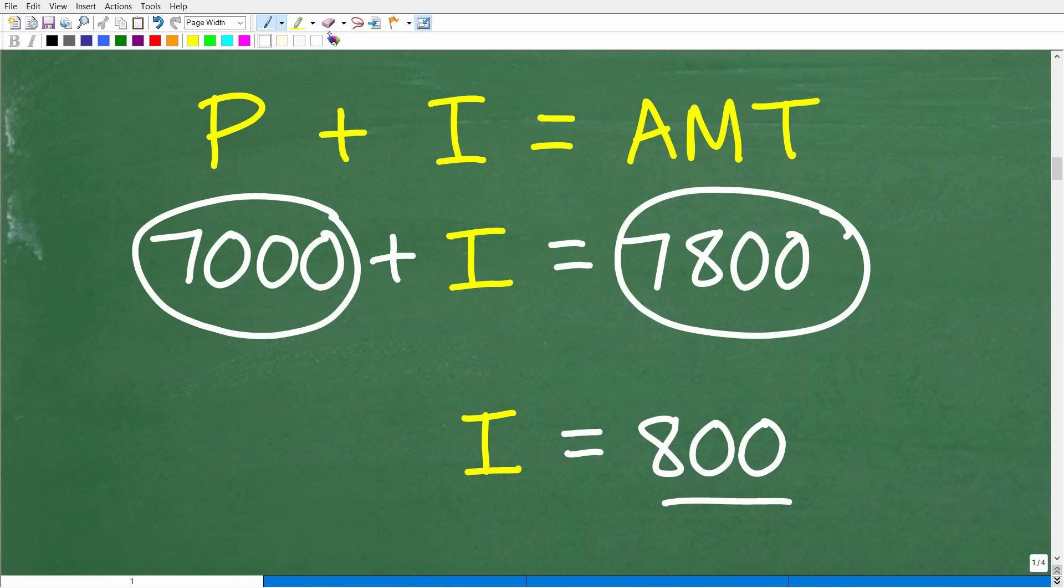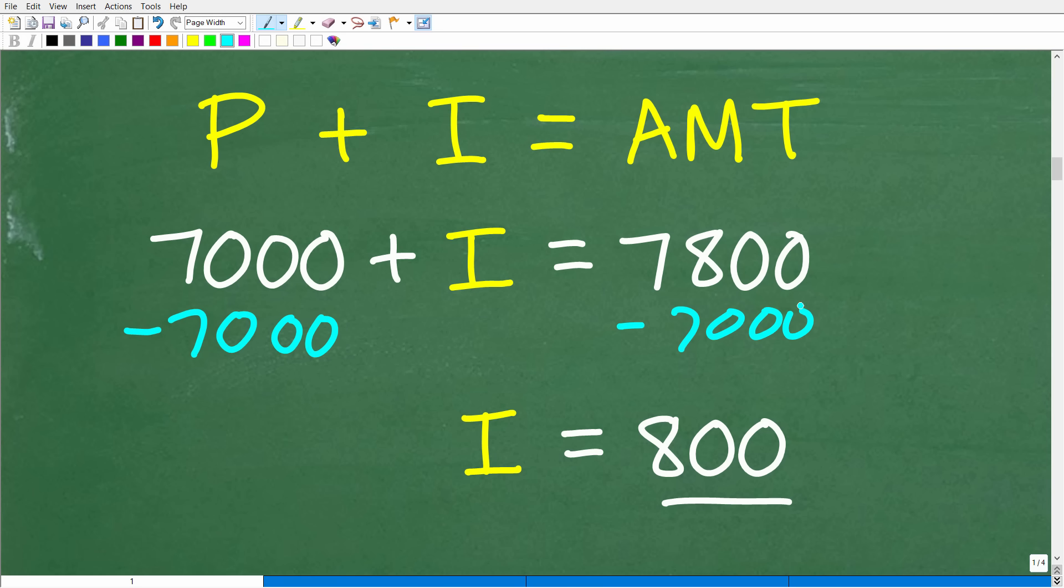But if you wanted to kind of use some algebra, basic algebra here, you can say, okay, well, principal plus your interest is your amount earned. So, I can simply just subtract $7,000 from both sides of the equation, and you're going to end up with $800 of interest. But again, that's just the amount of interest that you earn. We're looking for the interest rate.